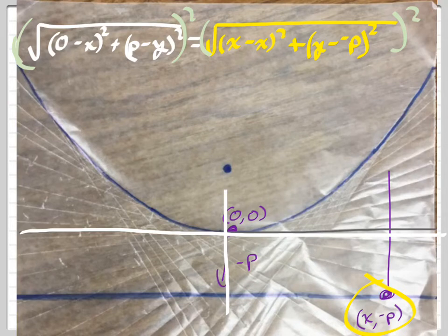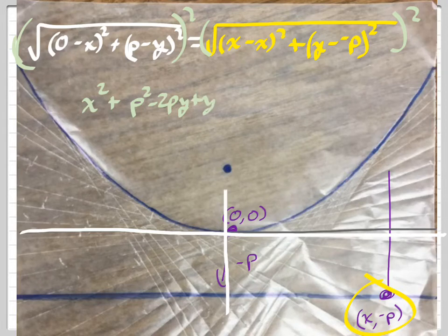So the square root signs are gone, and now I have negative x to the second power, which is x squared, and I have over here, I have, oh man, I'm going to have to distribute that. That's going to be p squared minus 2py plus y squared. All right, so that's the left side.